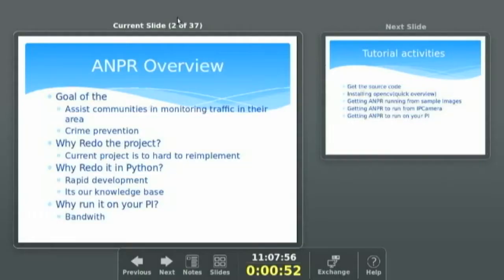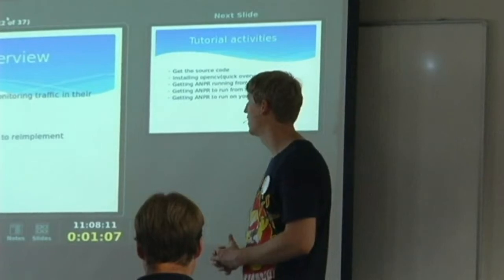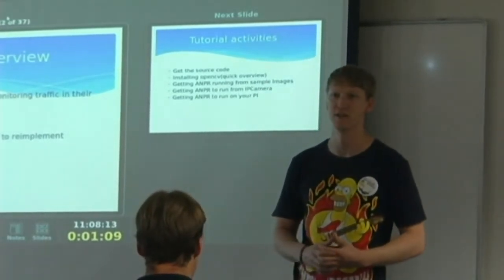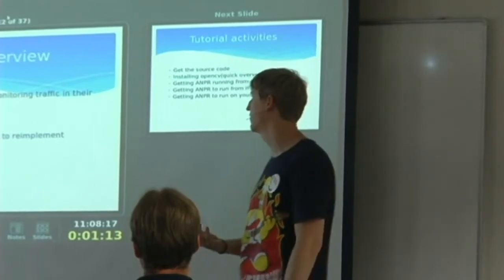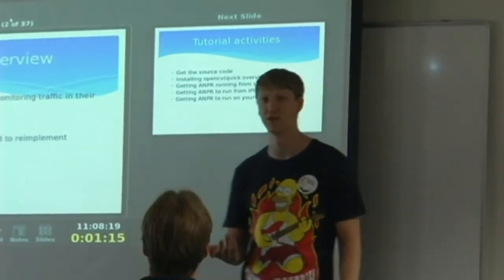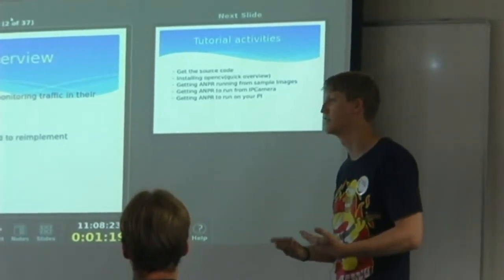So let's go back to slide one. What I'm going to be showing you a tutorial about is the ANPR — automatic number plate recognition system — which was actually coded by Quibus for communities. The idea behind it was basically to assist communities in monitoring the traffic that comes in and out of community areas, to assist them with criminal activity and stuff like that.